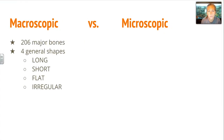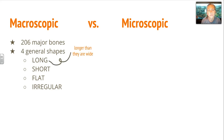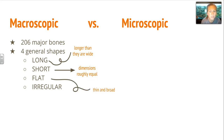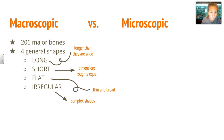We can look at the skeletal system macroscopically or microscopically. Macroscopically, we can see 206 major bones and four general shapes. Long bones are longer than they are wide. Short bones are generally equally proportional dimensionally. Flat bones are very thin and broad. And then irregular shapes are complex shapes that don't fall into those other categories.